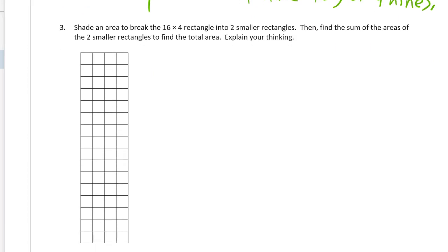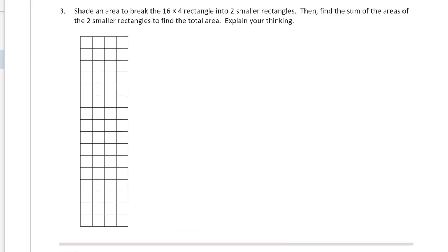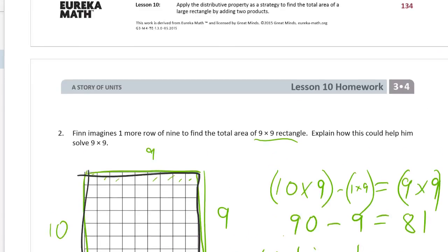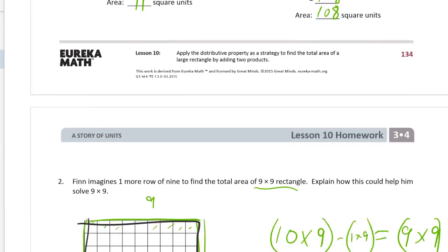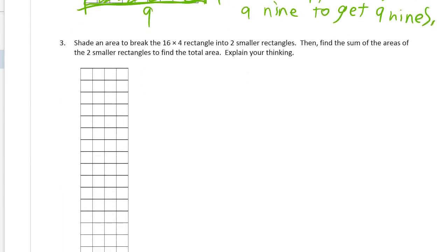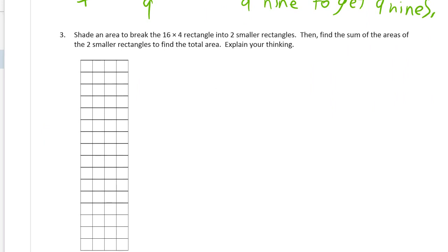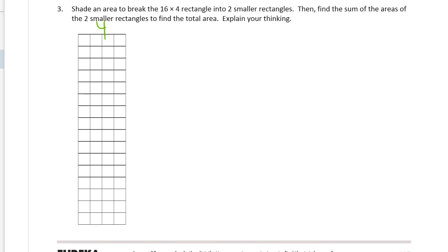And shade an area to break the 16 by 4 rectangle into two smaller rectangles. Then find the sum of the areas of the two smaller rectangles to find the total area. Explain your thinking. So this is just the same thing that we've been doing here on the first page. And we want to work with 2s, 5s, and 10s whenever we can. So let's just get 10. This is 4, and that's 4. And let's make this 10 and 6. So we want 1, 2, 3, 4, 5, 6.